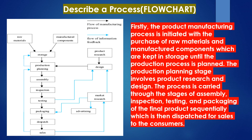Firstly, the product manufacturing process is initiated with the purchase of raw materials and manufactured components, which are kept in storage until the production process is planned. The production process planning stage involves product research and design. The process is then carried through the stages of assembly, inspection, testing, and packaging of the final product sequentially, which is then dispatched for sales to the consumers.